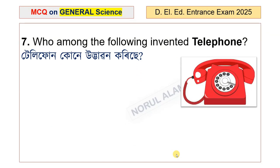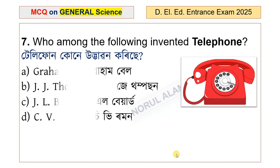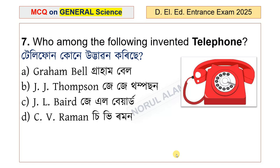Question number 7: Who among the following invented the telephone? The options include Graham Bell, J.J. Thompson, J.L. Bayard, and C.V. Raman. Alexander Graham Bell invented the telephone.